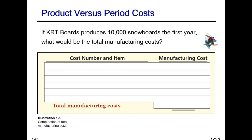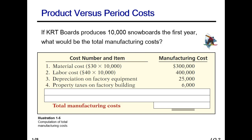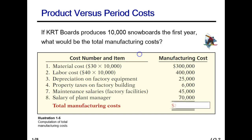If KRT Boards produces 10,000 snowboards in the first year, what would be the total manufacturing costs? We have $30 in materials times 10,000, plus $40 in labor times 10,000, plus depreciation of $25,000, property taxes of $6,000, maintenance salaries of $45,000, and salary of the plant manager. Our total manufacturing costs for the 10,000 snowboards are $846,000.